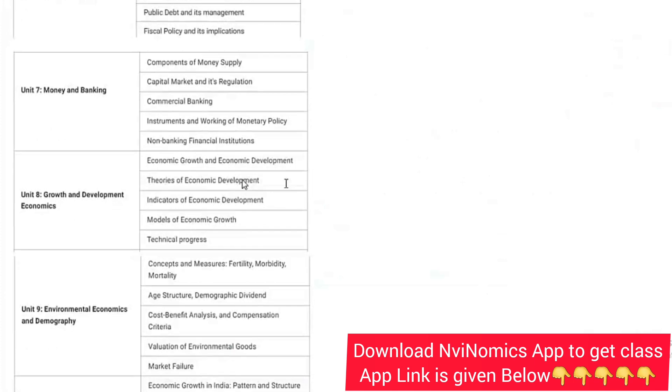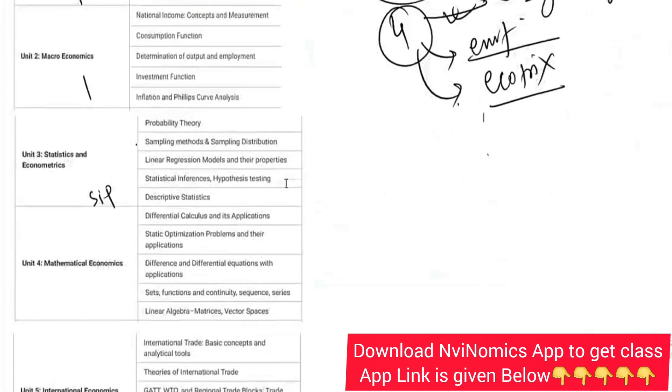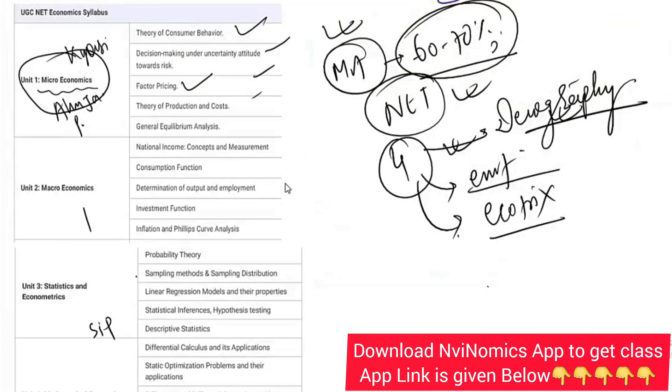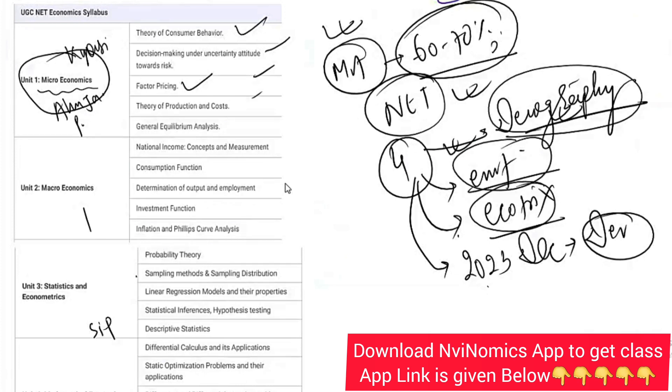International economics, public economics, growth and development - growth was there but I think in CUET there was no development. People who are aspiring for NET examination December 2023, you have to read development in a detailed way. These four new topics are added for the JRF or NET.